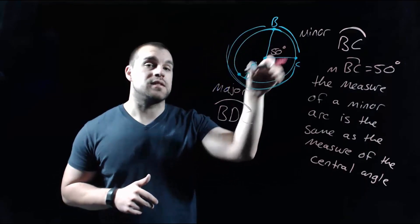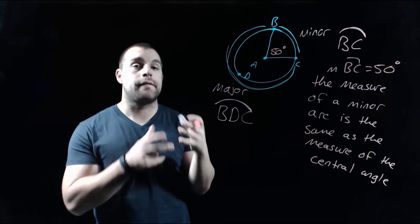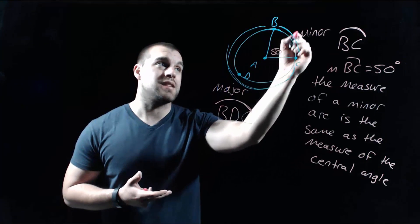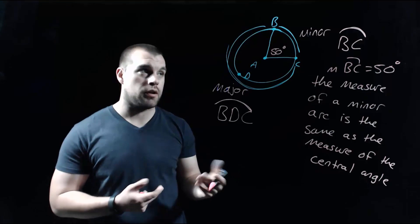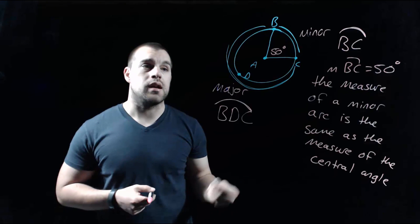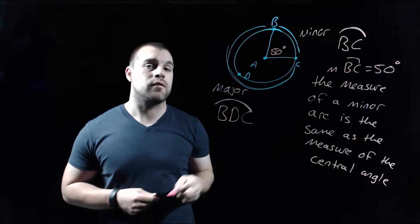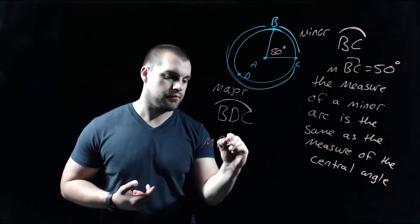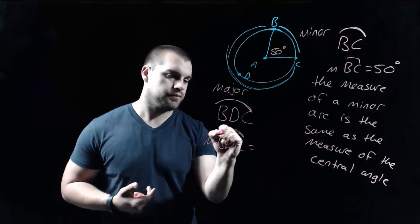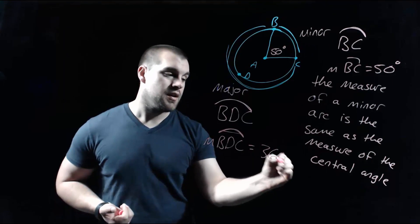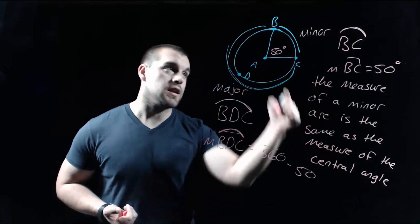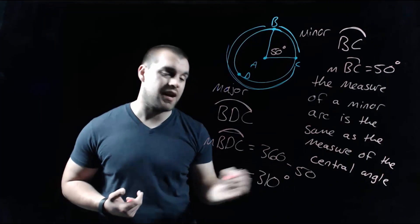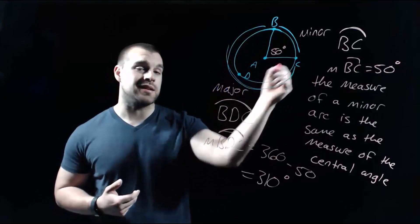If we wanted to find the measure of the major arc, we know that a full circle is 360 degrees. Since this is a minor arc, it has to be a 50-degree arc. So the major arc is just whatever's left over. To find the measure of the major arc from B to D to C, we take 360 degrees and subtract off the 50 from the minor arc BC, and we end up with a 310-degree major arc BDC.